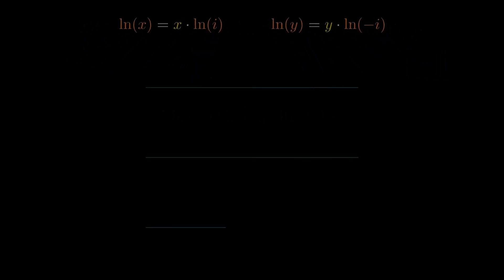To answer that, we leave algebra behind and move to geometry. On the complex plane, the number i lies one unit above the origin. That corresponds to a rotation by pi over 2.